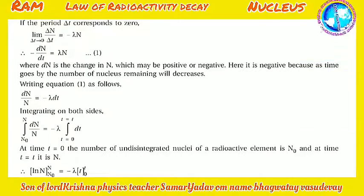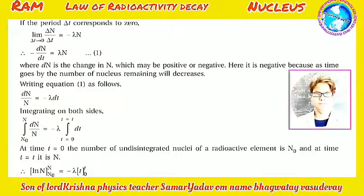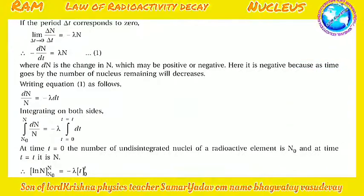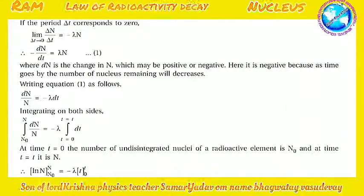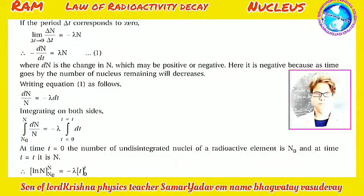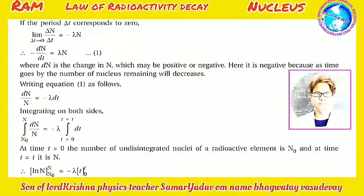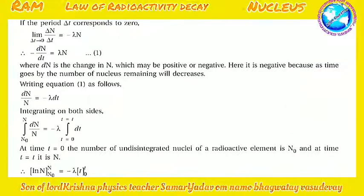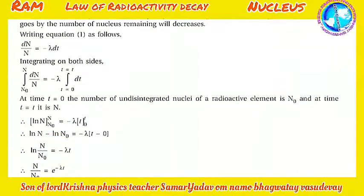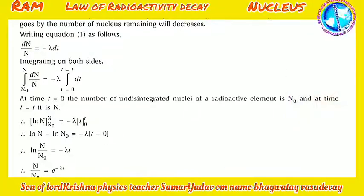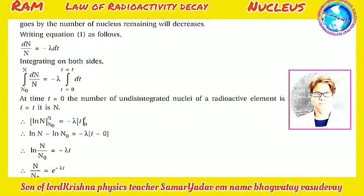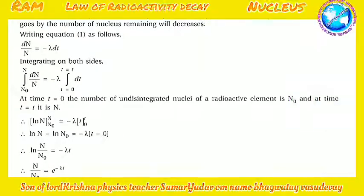Integrating both sides from N₀ to N and from t = 0 to t: ∫dN/N = −λ∫dt. At t = 0, the number of undisintegrated nuclei is N₀, and at time t it is N.